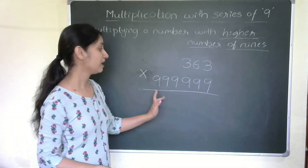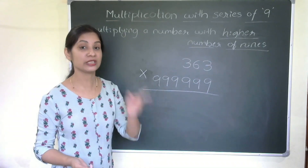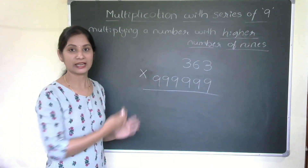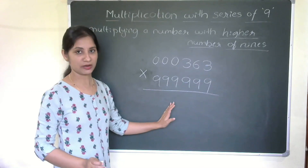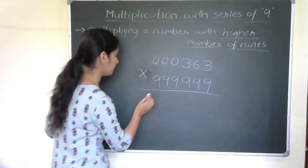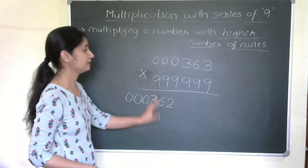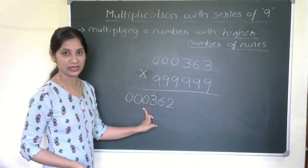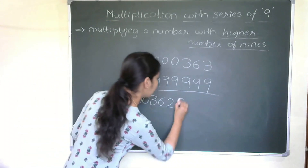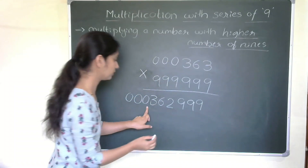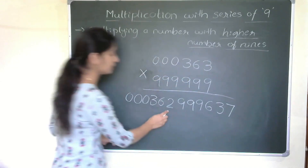In this example, I have six 9s but only a 3-digit number. The first step is to add three leading zeros to make it a 6-digit number: 000 followed by the digits. Then deduct 1. For the remaining six digits, deduct each from 9 left to right: 9−0=9, 9−0=9, 9−0=9, 9−3=6, 9−6=3, 9−2=7. That gives the complete answer.